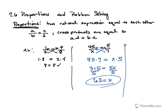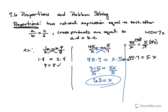I'll also show you the 7.5 way for 45 over X equals 5 over 7. The LCD would be X and 7, so 7X. Multiplying each term by 7X, the X's cancel, leaving 45 times 7. The 7's cancel, leaving 5 times X. So you get 315 equals 5X — the exact same result. That's the beauty of proportions: the cross-product method and the LCD method are equivalent. Let's apply the proportion rules to the example we just did from 7.5.